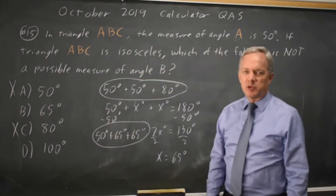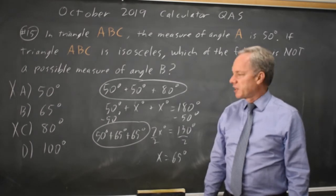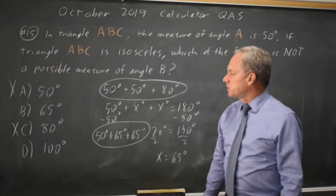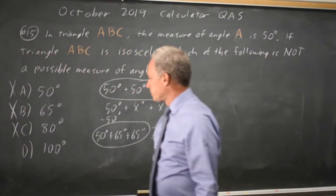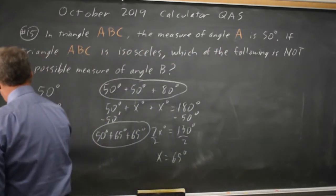just like 50 plus 50 plus 80 adds up to 180. So those are possible angles for an isosceles triangle that has a 50-degree angle at A. And they're asking which is not possible, 65 is possible, so choice B is wrong,